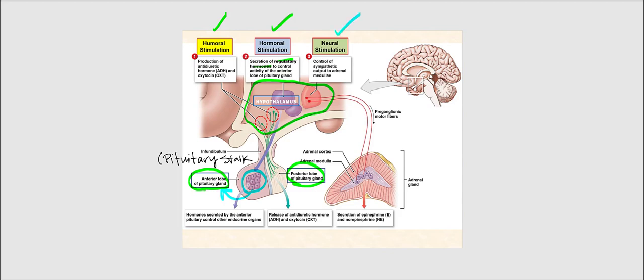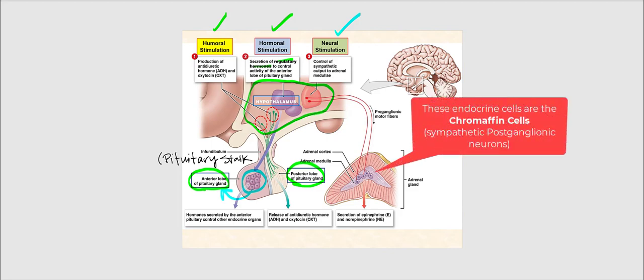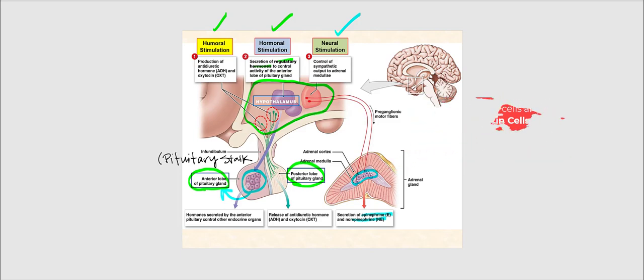Neural stimulation involves the hypothalamus controlling the sympathetic division of the ANS. Remember, the hypothalamus is the boss or control center of the ANS. Through action potentials, the endocrine cells in the adrenal medulla release epinephrine and norepinephrine that end up in blood — they are not considered neurotransmitters because they enter the bloodstream.